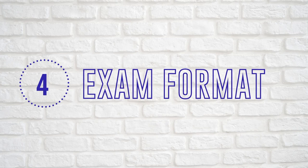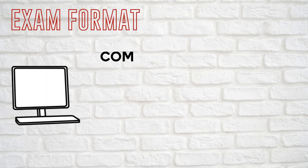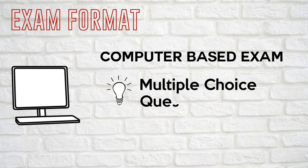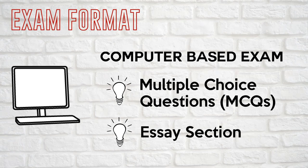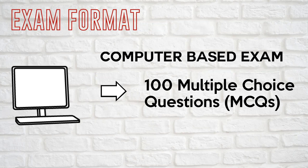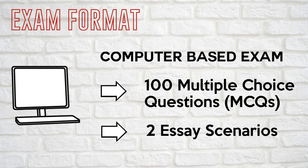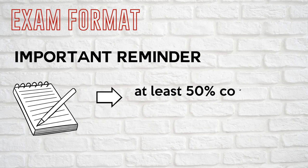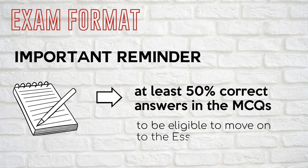Now let's talk about the exam format. Similar to Part 1, the Part 2 exam is also computer-based, for both the MCQ and the SA section. In the CMA exam, you will encounter two types of questions: multiple choice questions — there are 100 of them — and SA questions, of which there are two in Part 2. Please note that you must answer at least 50% of the MCQs correctly to be able to move on to the SA section.